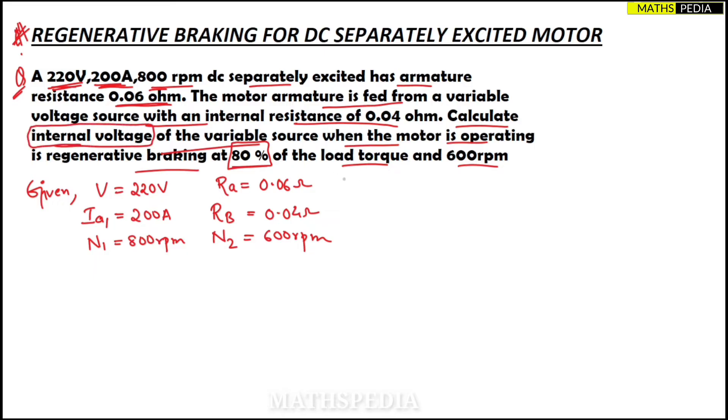The internal voltage formula is: internal voltage = E2 - Ia2(Ra + Rb). This is the formula where Ra and Rb is given in the question itself, that is armature resistance and internal resistance, 0.06 and 0.04.